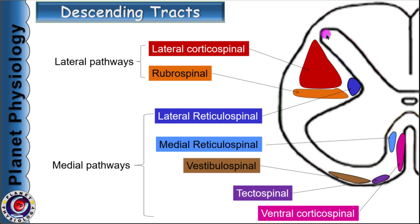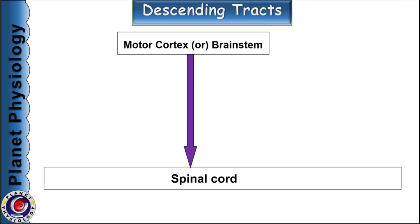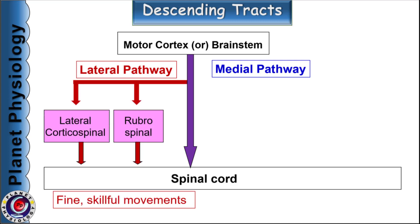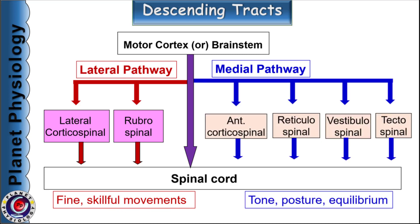Here is the cross-section of the spinal cord showing the location of all the descending tracts. Descending tracts occupy the lateral and anterior columns of the spinal cord; the posterior column does not contain any descending tracts. Functionally, descending tracts can be classified based on the location of their termination in the anterior horn. Tracts terminating on the lateral group of neurons are called lateral pathways — these include the lateral corticospinal tract and rubrospinal tract, both concerned with fine skillful movements. Medial pathways include anterior corticospinal, reticulospinal, vestibulospinal and tectospinal tracts, and are concerned with regulation of tone, posture and equilibrium.